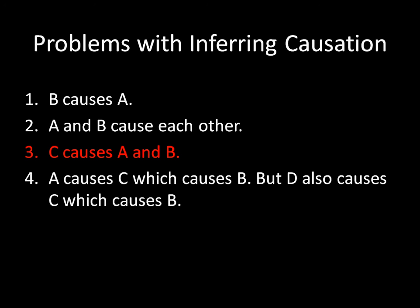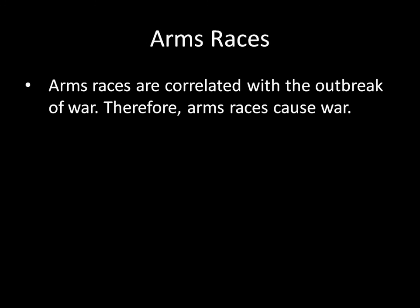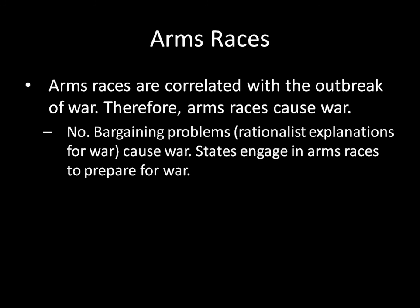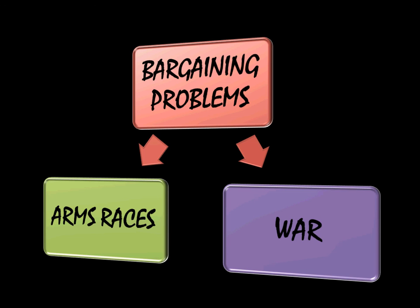Next, it could be that a third thing C is causing both A and B. There's a classic example in international relations. Perhaps someone told you that arms races cause war — that's mistaken. It is true that arms races are correlated with the outbreak of war, but to say arms races cause war is incorrect. What's actually causing conflict is bargaining problems — remember the rationalist explanations for war unit, preventive war, information problems? Those are the things causing war. And when states know they're about to go to war, they engage in arms races to build weapons. So it's bargaining problems causing both the arms races and the war, not the arms races directly causing the war.